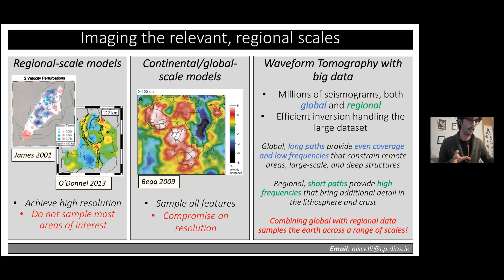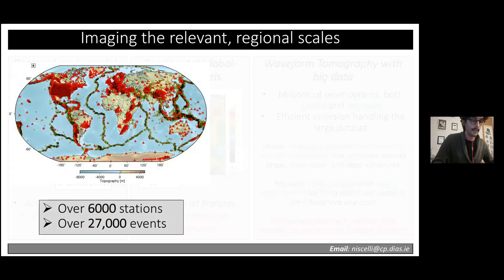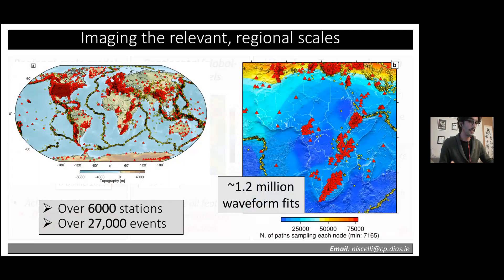In practical terms, at DIAS we collected a dataset of over 6,000 stations and 27,000 events that combined produce over 1.2 million waveform fits sampling our final model. This means we have over 7,000 data points at minimum sampling each point of our model in the African region, as shown on this map.